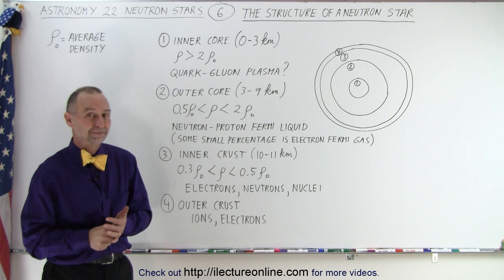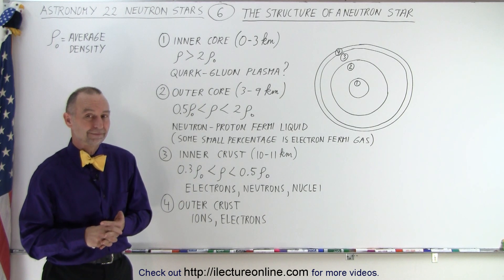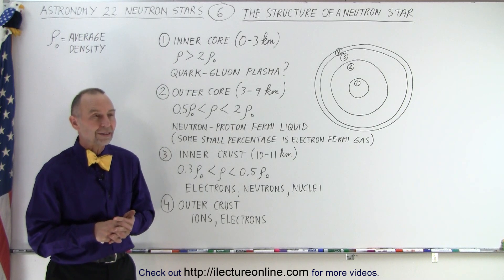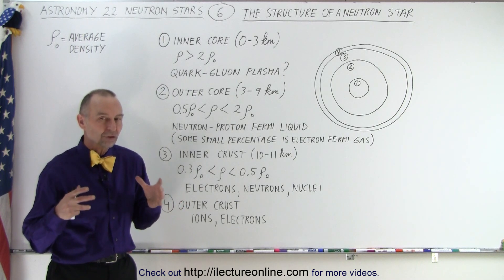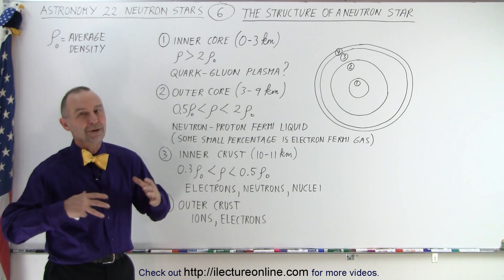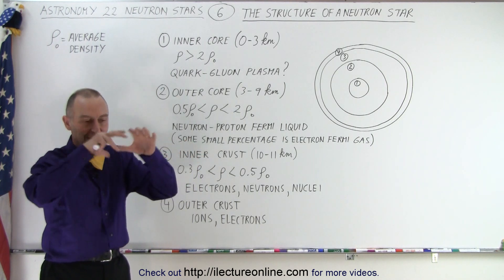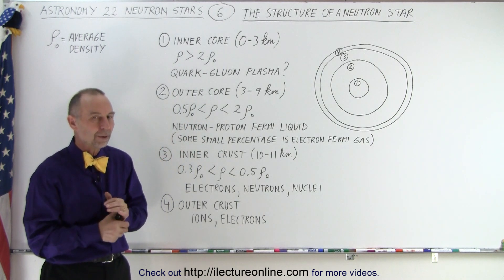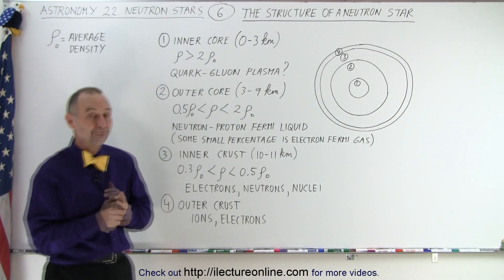Are neutron stars all about the same size? Yeah, I'll talk a little bit more about that. It turns out that the more mass a neutron star has, typically the smaller it becomes. The less mass, the bigger it becomes. The enormous pressure of added material will actually push the star to a smaller size, but we'll talk a little bit more about that in a later video. Okay, good question.